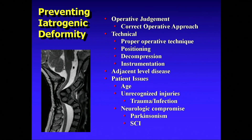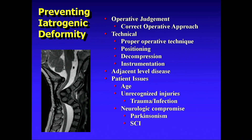The second issue is technical problems. We have gotten better in different things — using the proper operative technique, going anterior when the spine is kyphotic, using our instrumentation better. When I was a resident, we used to do tons of three-level corpectomies. I haven't done a three-level corpectomy in a long time. Changing our strategies and understanding multi-segmental fusion versus corpectomy is probably a good thing.